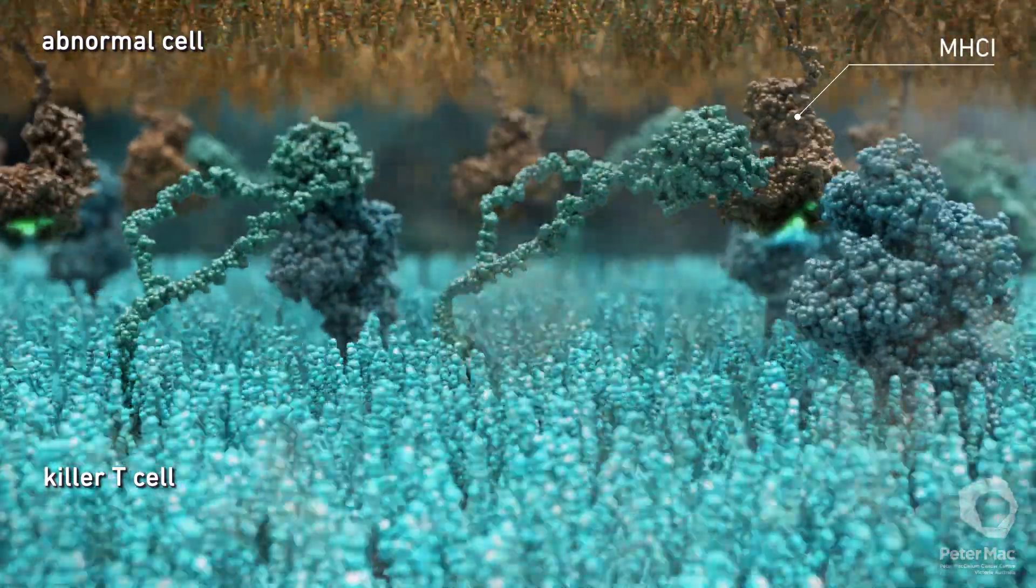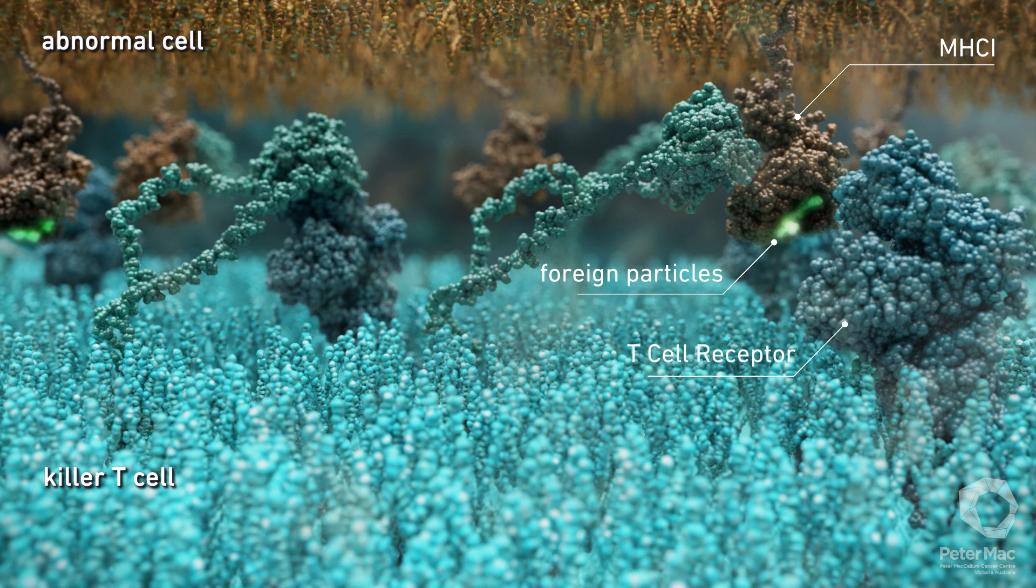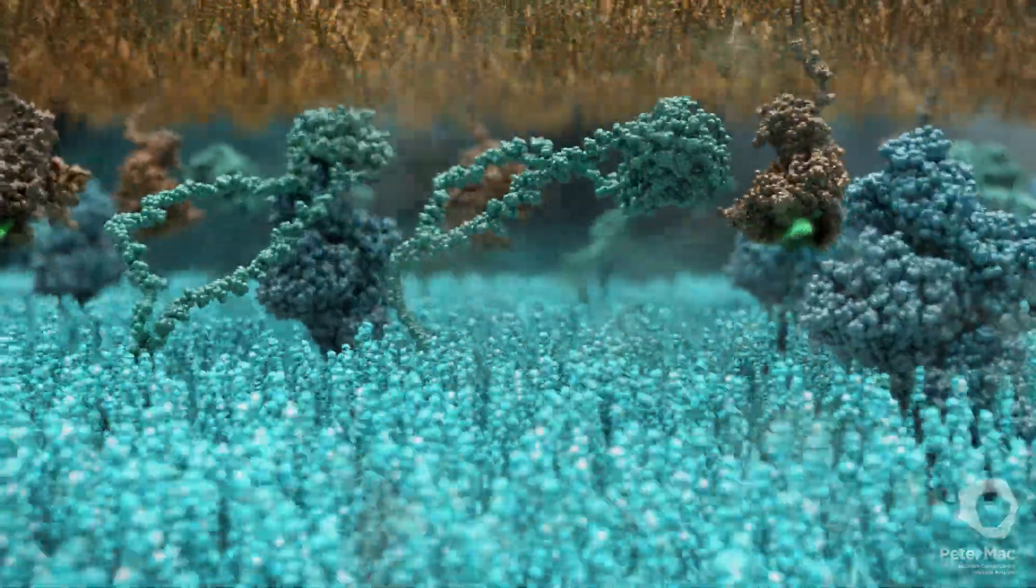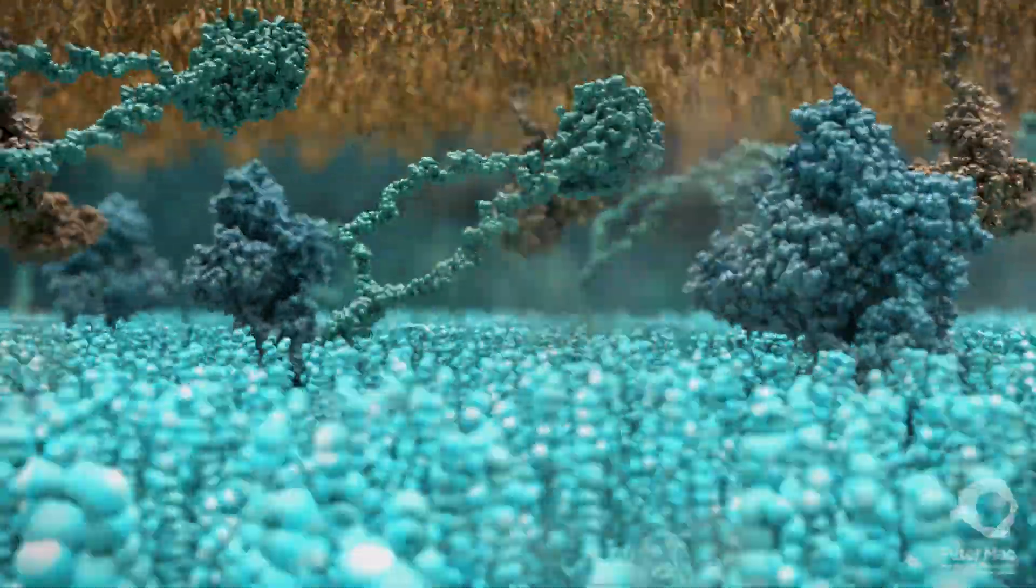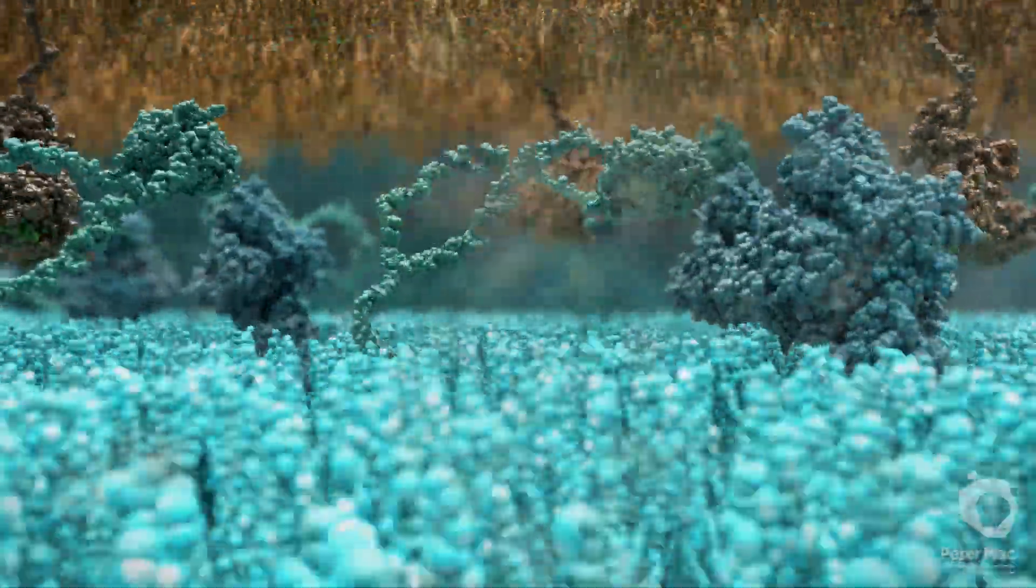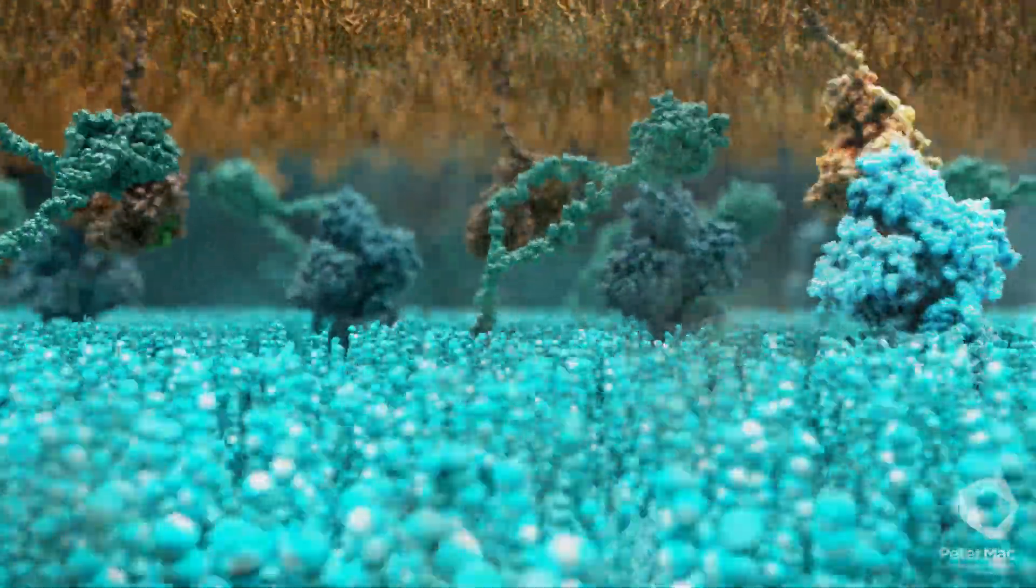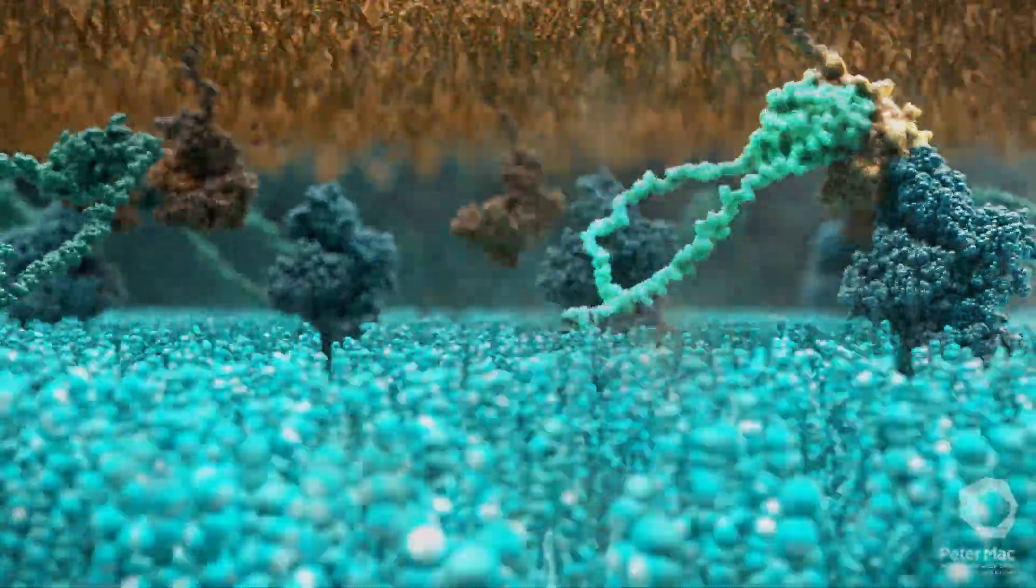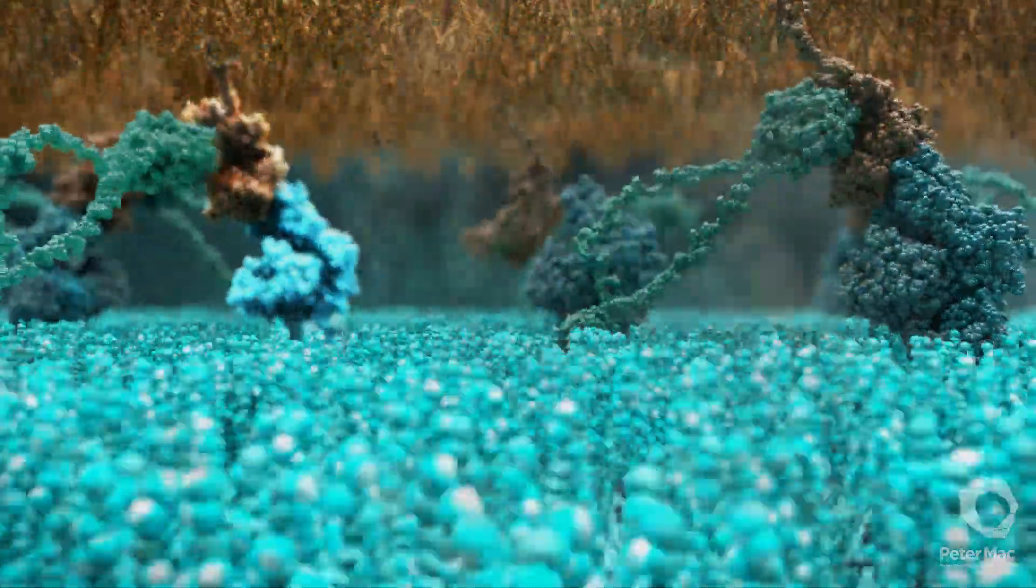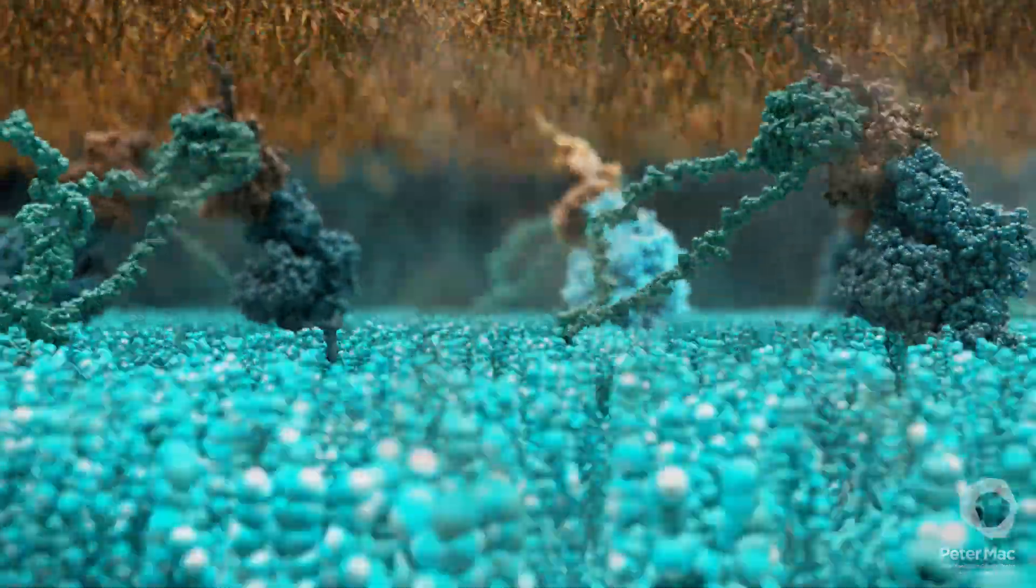A molecule called MHC1 on the surface of an abnormal cell presents foreign particles that can be detected by the killer T cell receptor. The T cell receptor then binds to these foreign particles, with a second receptor binding event stabilizing the connection. The process is occurring again on the left, and in the background.